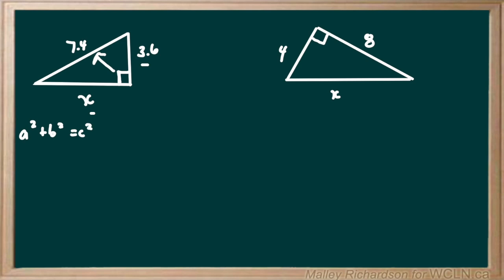Let's say that 3.6 is a and x is b. It doesn't matter what you pick for x and 3.6 as long as you know that neither of them are the longest side length. So we have 3.6 squared plus x squared equals 7.4 squared.